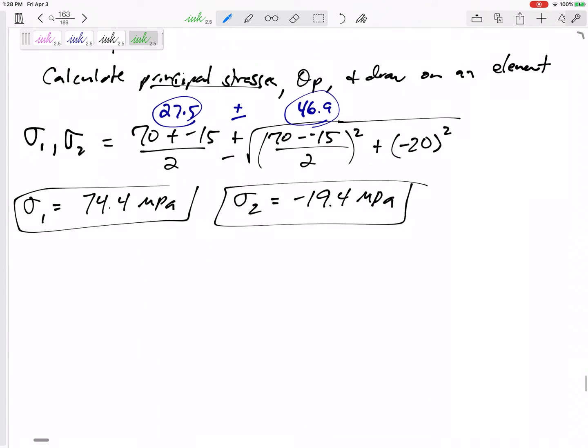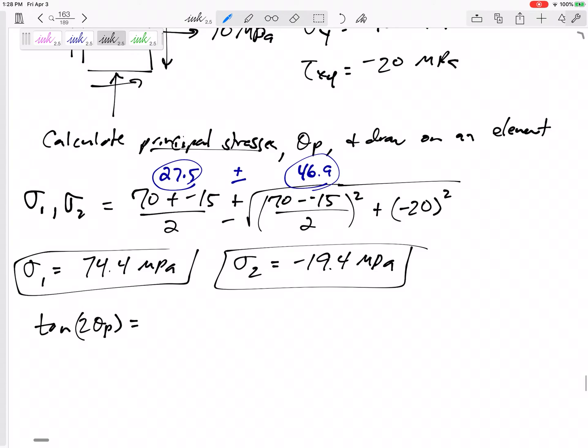Alright, so those are the principal stresses. Now the principal orientation theta p, we've got an equation for that. Tangent of two theta p would be tau xy, negative 20, divided by sigma x minus sigma y divided by two right there.